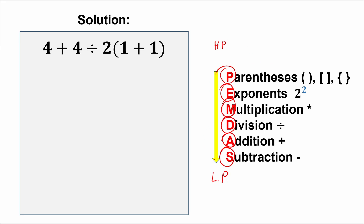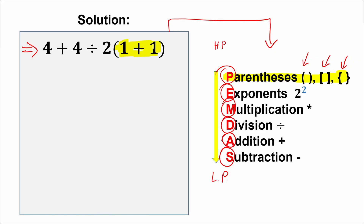Parentheses have the highest priority, so just underline them. Let's scan our question: where do we have parentheses? Obviously we have parentheses right here. So our first step is to evaluate the expression in parentheses. We have 1 plus 1, which equals 2. My quick recommendation: don't jump from left to right, just do it step by step. So we have 4 plus 4 divided by 2, and in parentheses 1 plus 1 equals 2.